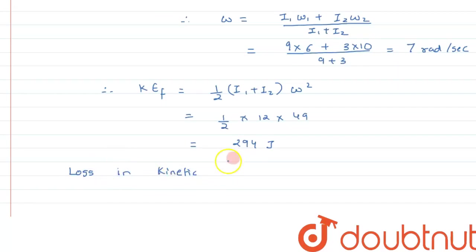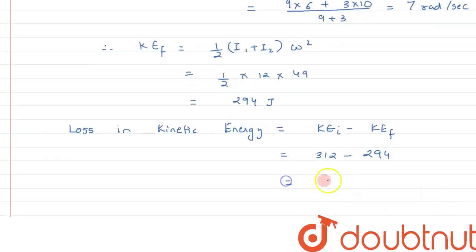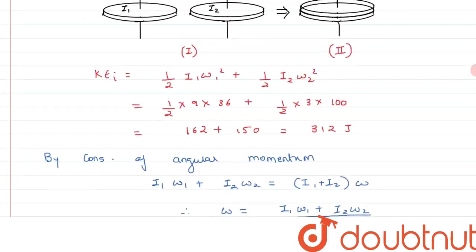Loss in kinetic energy, this loss is mainly due to friction. Loss in kinetic energy will be kinetic energy initial minus kinetic energy final. From here initial value was 312 minus 294, so value comes out to be 18 joule. So 18 joule is the right answer to this question.